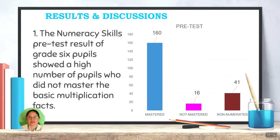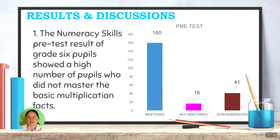Results and Discussion: The numeracy skills pretest results of 217 pupils revealed that 74%, or 160 pupils, mastered the basic multiplication facts with a score of 80 to 100. 18%, or 41 pupils, were non-numerates with a score of 50 and below. Those pupils that fell under not-mastered and non-numerates — 56 among them — were selected as participants in the study.